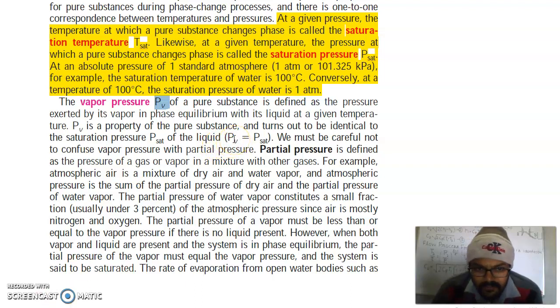Now, don't get confused with vapor pressure and partial pressure. While partial pressure is defined as the pressure of a gas or vapor in a mixture with other gases. For example, the atmosphere is a mixture of dry air and water vapor, and atmospheric pressure is the sum of partial pressure of dry air and the partial pressure of water vapor. The partial pressure of water vapor constitutes a small fraction, usually 3% of the atmospheric pressure since air is mostly nitrogen and oxygen.